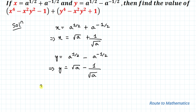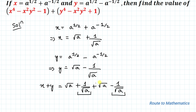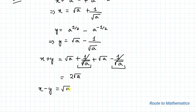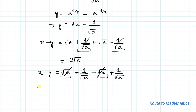In the next step we are going to find the value of x plus y. So x plus y equals to (√a + 1/√a) + (√a − 1/√a). Here the positive 1/√a and negative 1/√a cancel out, so we have x plus y equals to 2√a. Next, x minus y equals to (√a + 1/√a) − (√a − 1/√a). The √a terms cancel out, so x minus y equals to 2/√a.